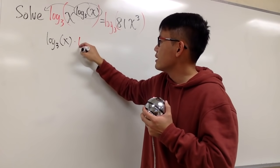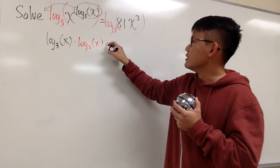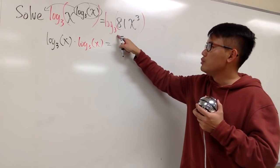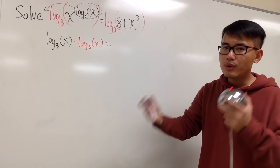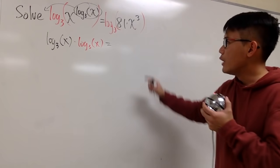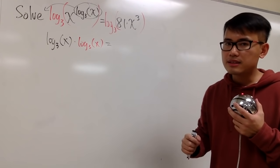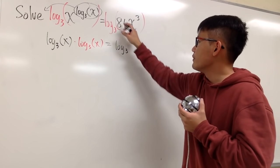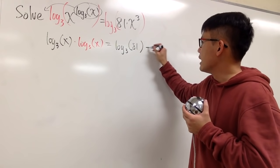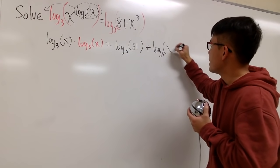Let me put this down in red, log base 3 of x. And this is equal to, we have log base 3 of 81, and this is a multiplication, 81 times x to the third power. We know, log of a product is the sum of two logs. We can break this apart as log base 3 of 81, plus log base 3 of x to the third power.